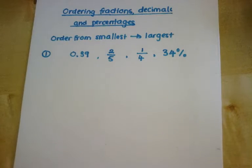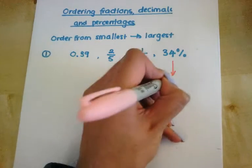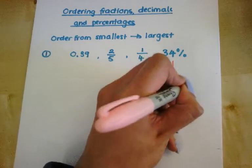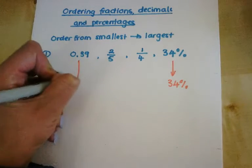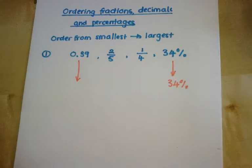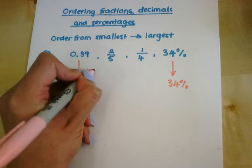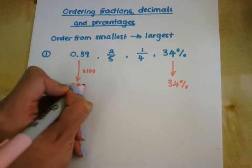So out of all of these, 34% is already in a percentage, so I'm just going to bring that down. 0.39 is a decimal, and I can change that to a percentage by multiplying by 100, so that ends up being 39%.